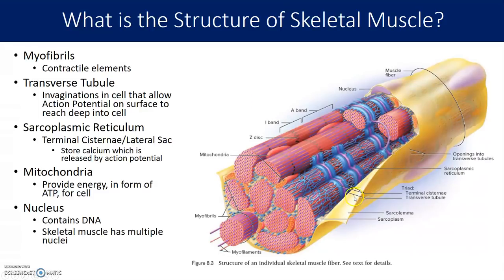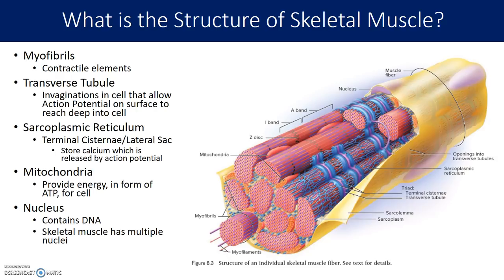Right next to the transverse tubule, on each side of it, you have the terminal cisternae or lateral sac of the sarcoplasmic reticulum — the SR. This is what stores a lot of calcium. It will release that calcium when an action potential travels down the T-tubule, and that calcium will then stimulate muscle contraction. Also within the muscle cell you have multiple mitochondria, which provide a lot of the ATP derived from aerobic metabolism.